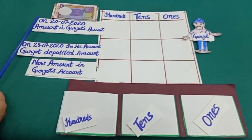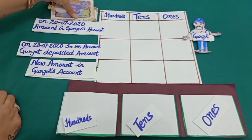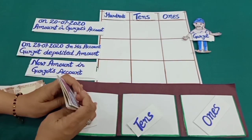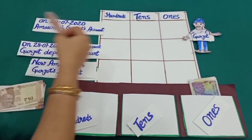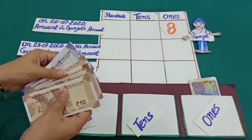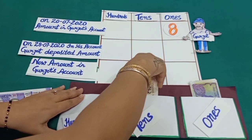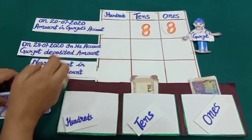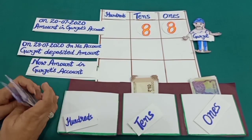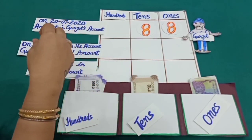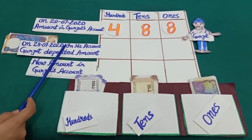Dear students, on 20th July, the amount in Gurjot's account was 488 rupees — that means 8 notes of rupees 1, so 8 at the ones place; 8 notes of rupees 10, meaning 80 rupees, so 8 at the tens place; and 4 notes of rupees 100, meaning 400, so 4 at the hundreds place.